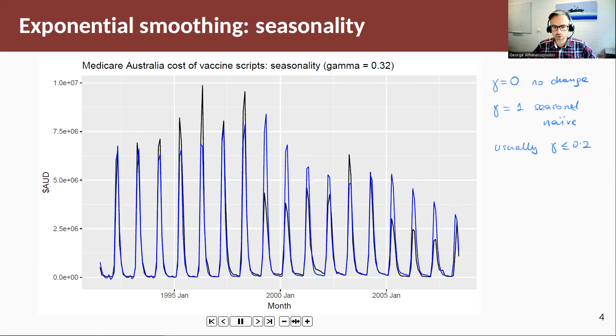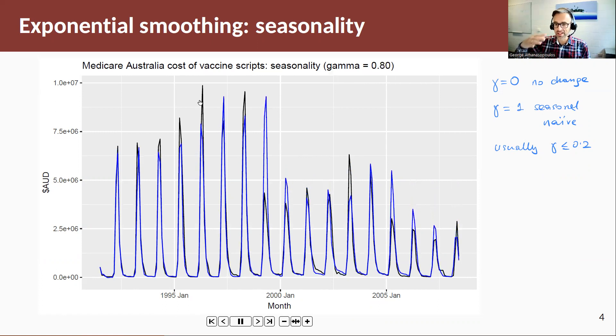So you can see as gamma increases, the seasonal component changes quite a bit. If we let the animation run, as gamma gets higher, you see that the seasonal component adjusts very quickly to account for the previous seasonality it sees. And when gamma goes close to 1 or gamma is equal to 0.99, then we have the seasonal naive. So the seasonal component actually very closely follows what it sees in the previous period.